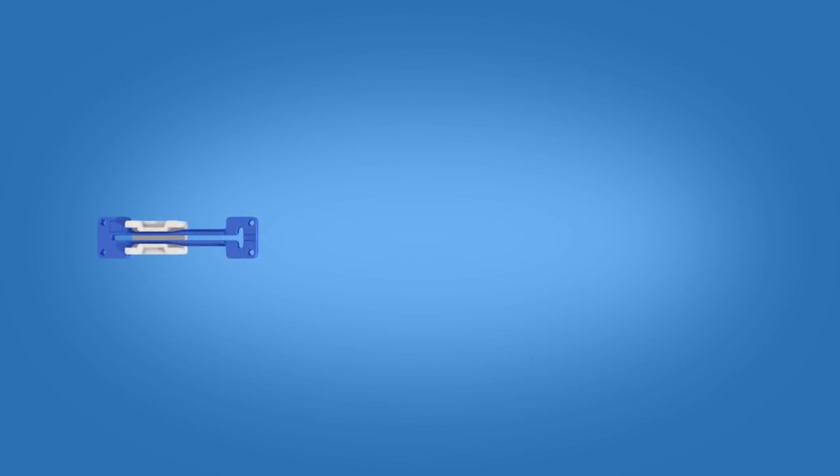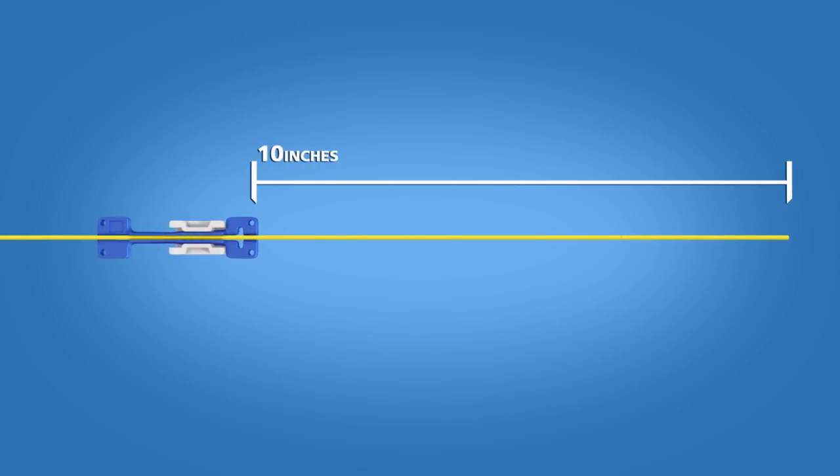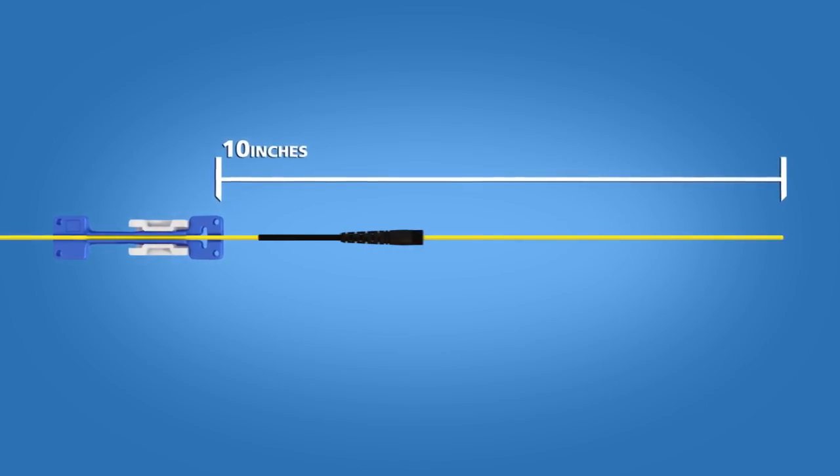For 2 and 3 mm terminations, begin by placing the appropriate cable clamp onto the cable about 10 inches from the end of the cable. Insert the appropriate boot onto the cable.